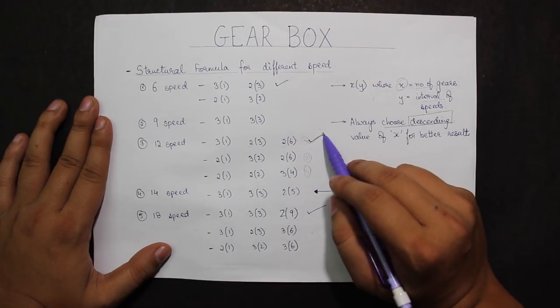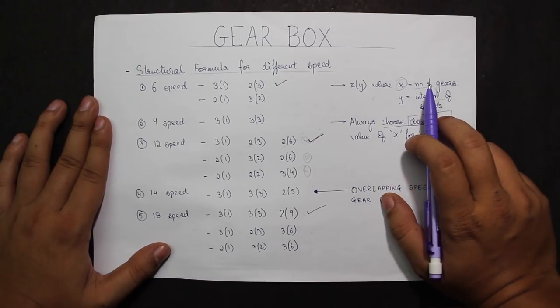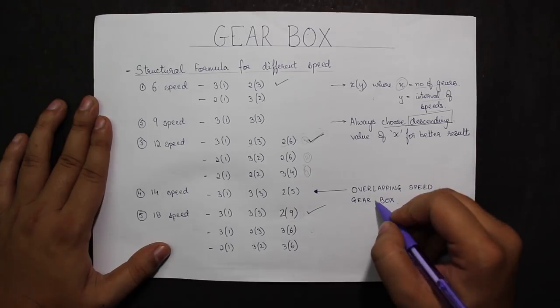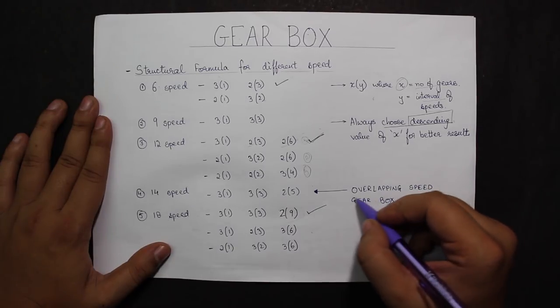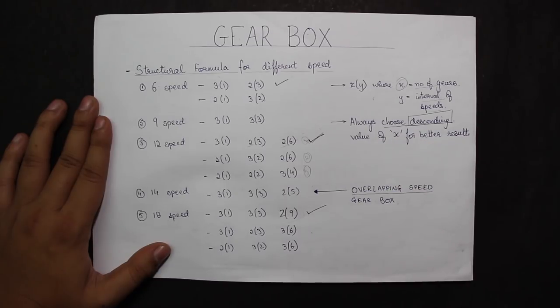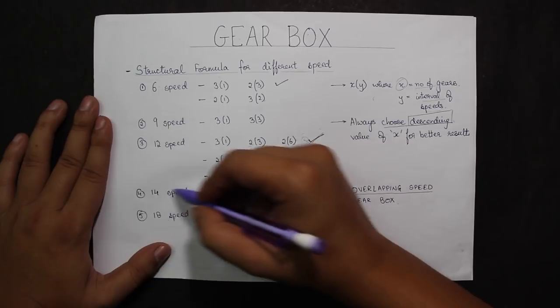The exception here is a 14-speed gearbox. This will be achieved by making an 18-speed gearbox with 4 overlapping speeds. As you solve questions, you'll come to know about the 14-speed special case.